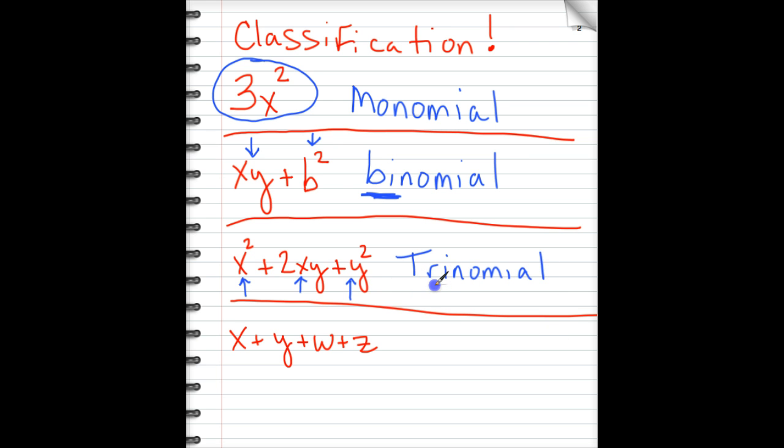Once you get past trinomial, which is three, you stop applying a specific name. These are just general polynomials. This is a four term polynomial. So I would just call this a general polynomial once you exceed three terms.